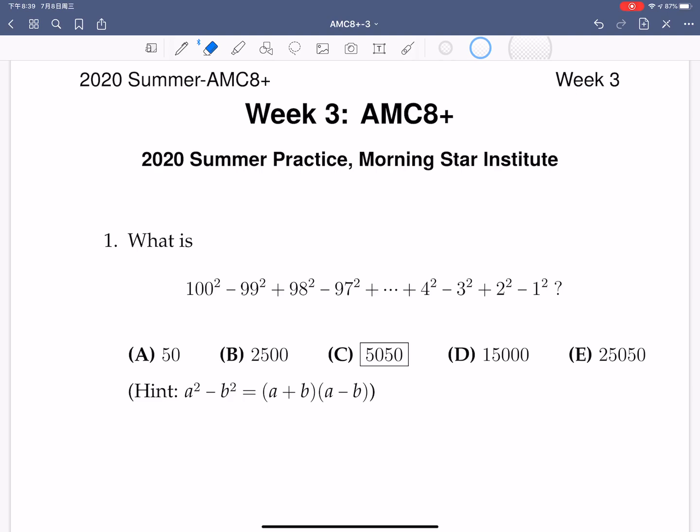Problem number 1. What is the expression? How to simplify it? We are going to use the hint. So 100 square minus 99 square, that's the first 2 terms. Using the hint, we know that it is going to be 100 plus 99 times 100 minus 99.